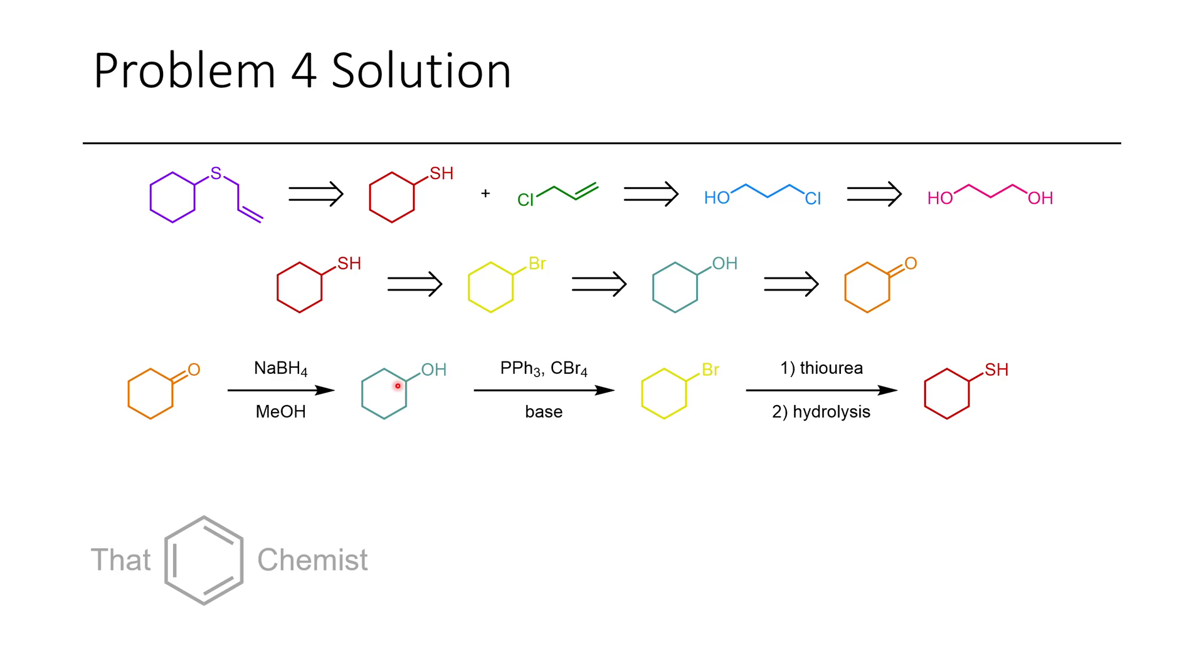In the forward direction we would start with cyclohexanone and do a reduction using sodium borohydride usually in methanol. That would afford our cyclohexanol. We could then do an Appel reaction with triphenylphosphine and carbon tetrabromide in the presence of a base. This would give us our cyclohexyl bromide. Then finally we could treat this with thiourea and upon hydrolysis of the thiouronium salt we would get cyclohexanethiol. Cyclohexanethiol will be used in our final step.